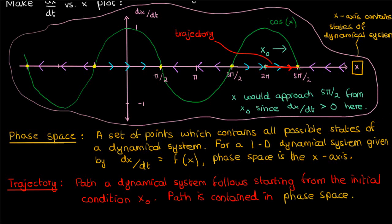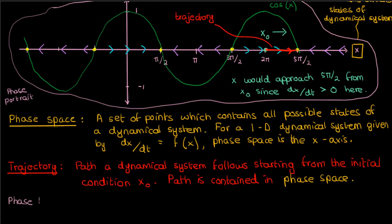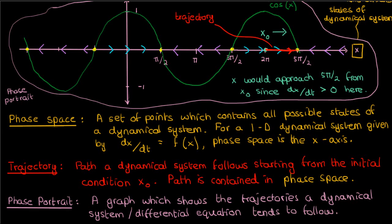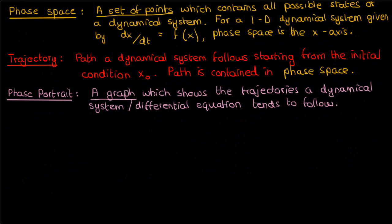Thirdly, this plot that I made of dx/dt versus x, this plot is called the phase portrait. The phase portrait is a graph which shows the trajectories that a dynamical system, or differential equation, tends to follow. Just to reiterate, a phase space is a set of points which contains the states and solutions to the dynamical system, while a phase portrait is a graph that shows the behavior of trajectories in phase space. Hopefully that should be clear enough.